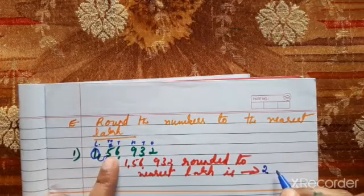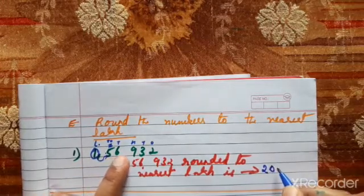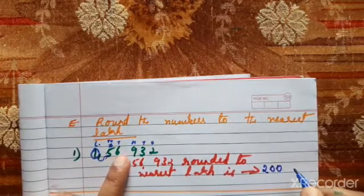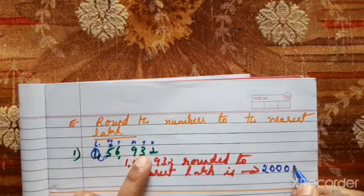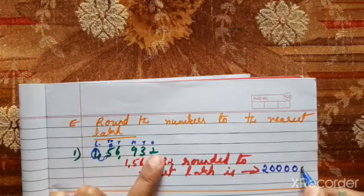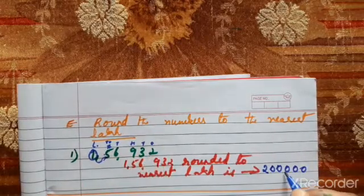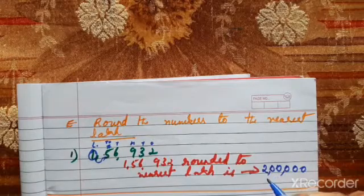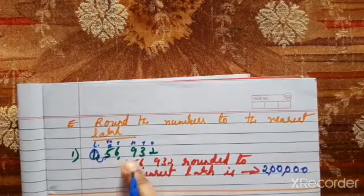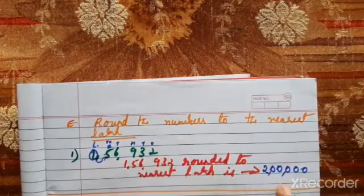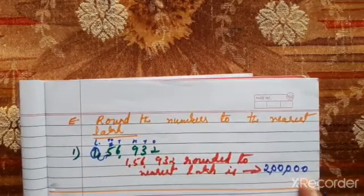Once the door is knocked, the remaining digits become poor — they all become 0. So this place is 0, 6 is 0, 9 is 0, 3 becomes 0, 2 becomes 0. So 1,56,932 rounded to the nearest lakhs is 2 lakhs.